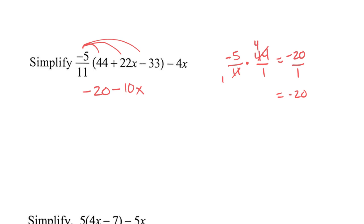So negative 5 elevenths times 22x. How many times does 11 go into 22? It goes in two times. What's 2 times negative 5? It's negative 10. So this is minus 10x because it was negative 10. And then we have this one. How many times does 11 go into 33? It goes in three times. What's 3 times 5? 15.